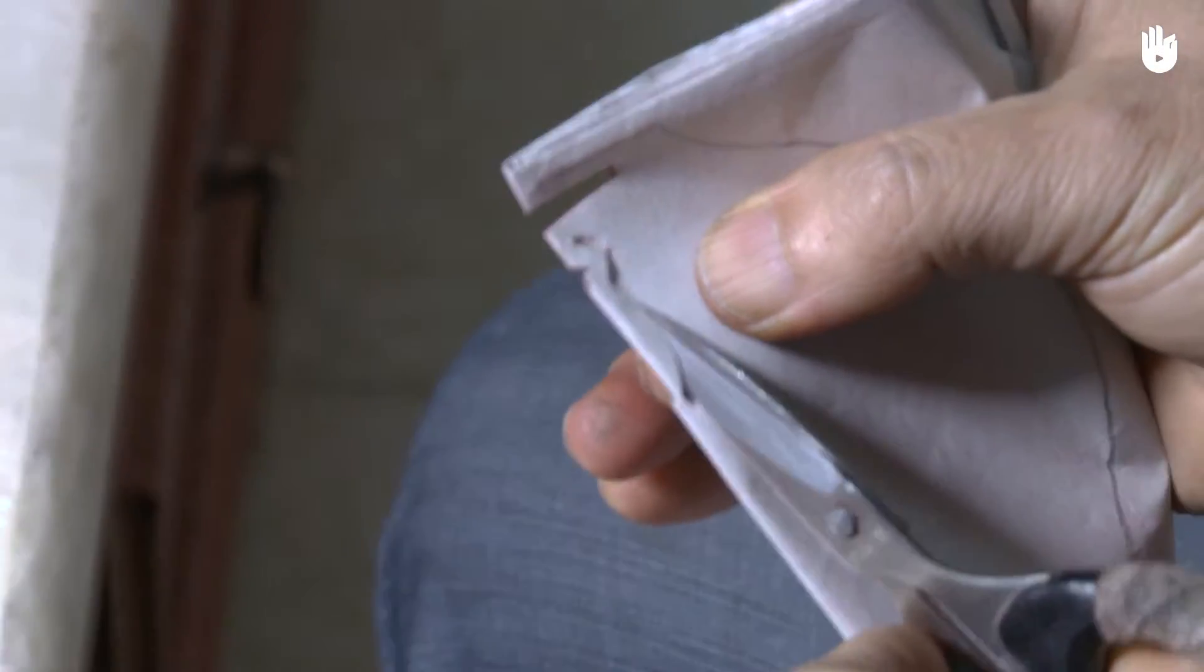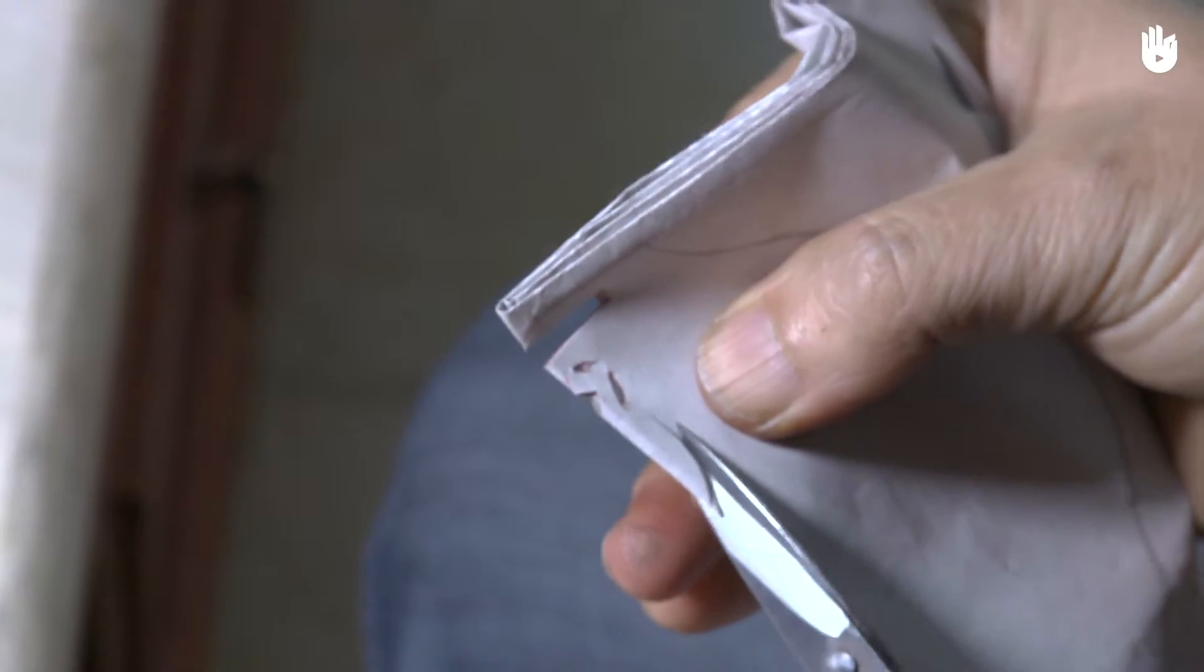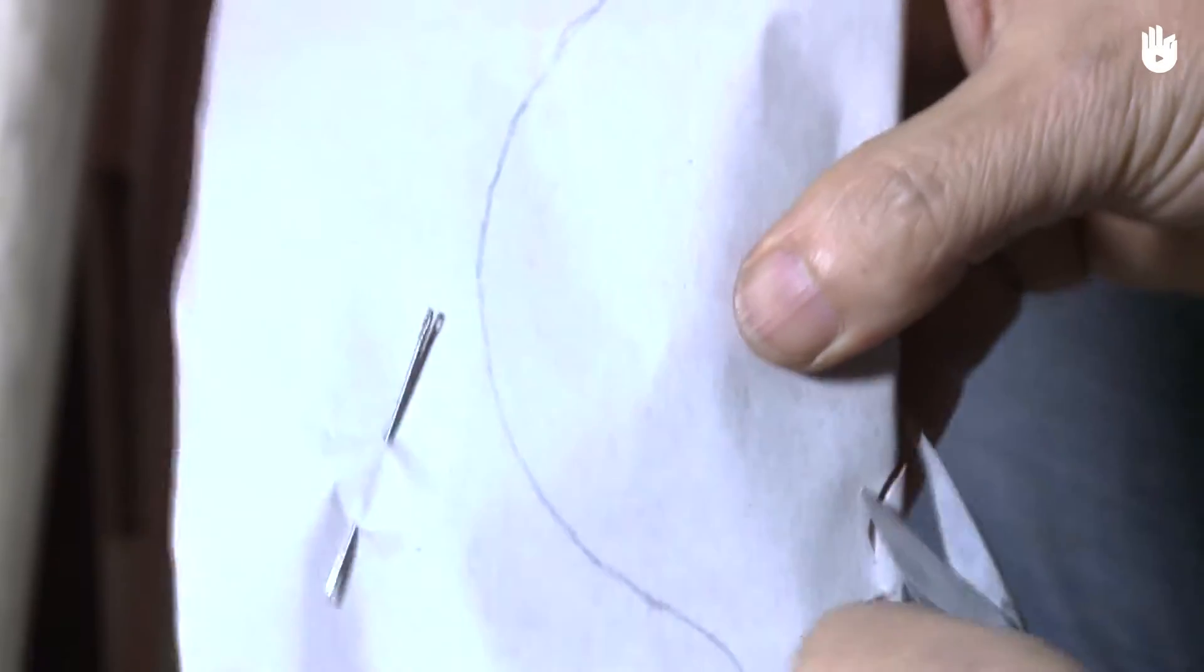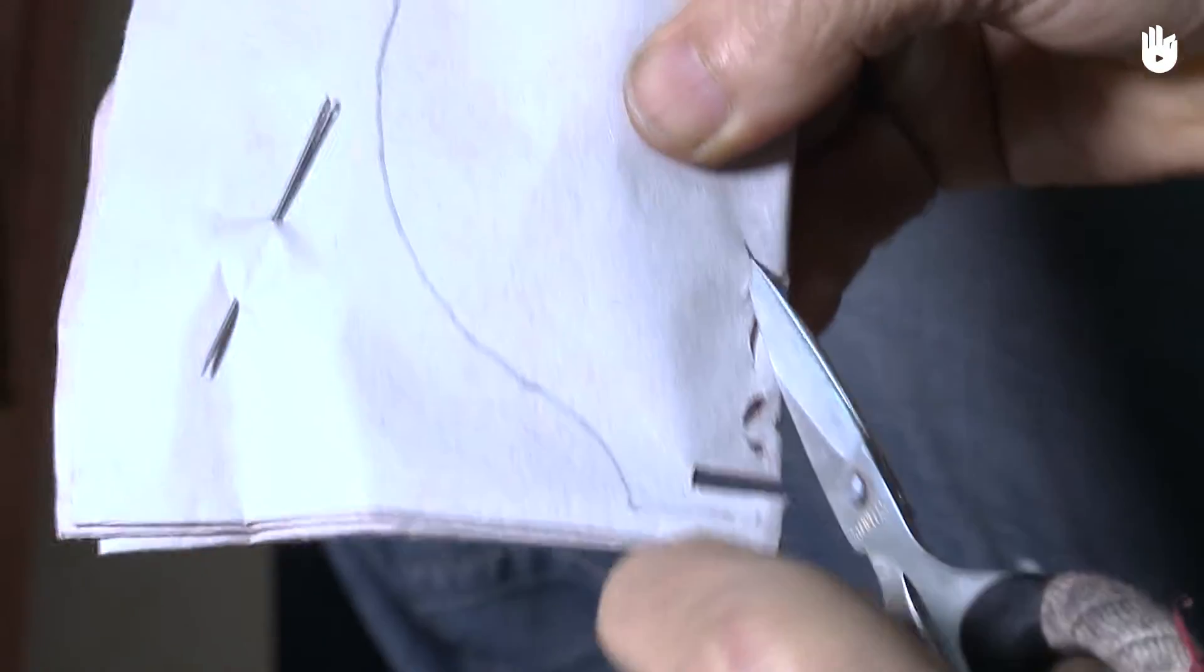Make a first curve here. Make a cut next to your curve to widen it. Pierce the paper and make another curve, in line with the first.